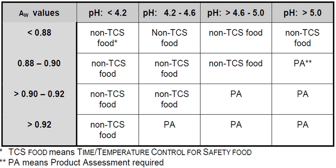Examples include: raw and cooked meat or foods containing meat, such as casseroles, curries and lasagna; dairy products, for example milk, custard and dairy-based desserts; seafood, excluding live seafood; processed fruits and vegetables, for example salads; cooked rice and pasta; foods containing eggs, beans, nuts or other protein-rich foods, such as quiche and soy products; and foods that contain these foods, such as sandwiches and rolls.